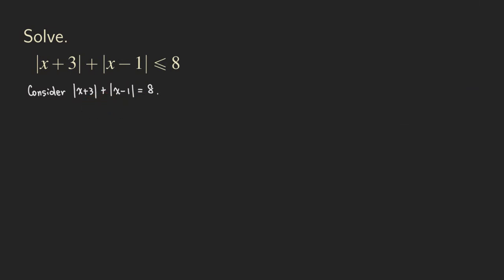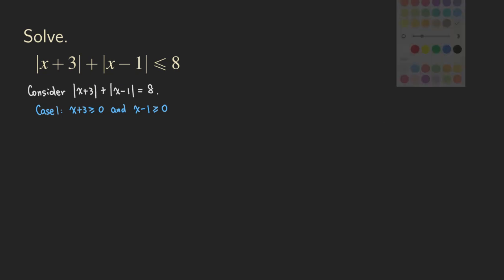Let's look at case 1. Case 1 is the easiest case — that's when the stuff inside the absolute values is all positive, or non-negative, so we can include 0. We are saying that x plus 3 is greater than or equal to 0, and x minus 1 is also greater than or equal to 0. When the stuff inside the absolute value is non-negative, we can simply remove the absolute value. So we have the equation: x plus 3 plus x minus 1 equals 8.